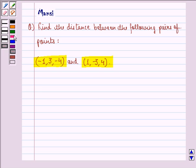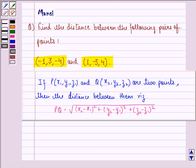Before starting with the solution, let us see the key idea behind the question. If the point P(X1, Y1, Z1) and the point Q(X2, Y2, Z2) are two points, then the distance between them PQ is given by square root of (X2 minus X1) whole square, plus (Y2 minus Y1) whole square, plus (Z2 minus Z1) whole square.